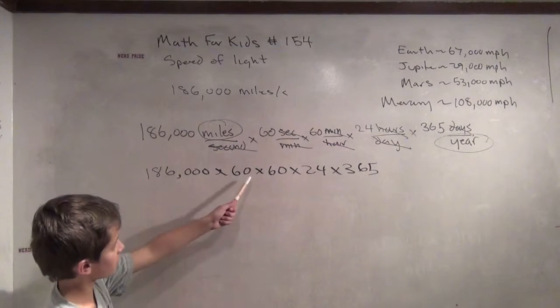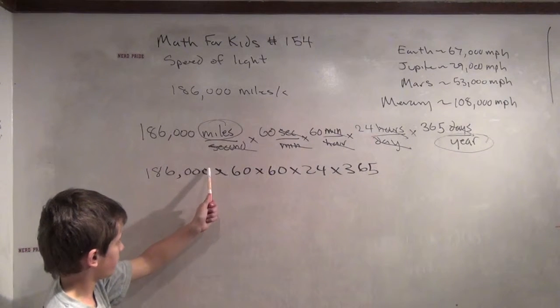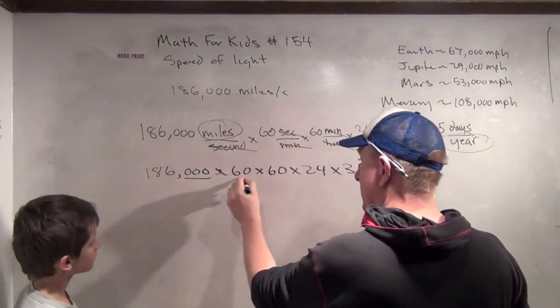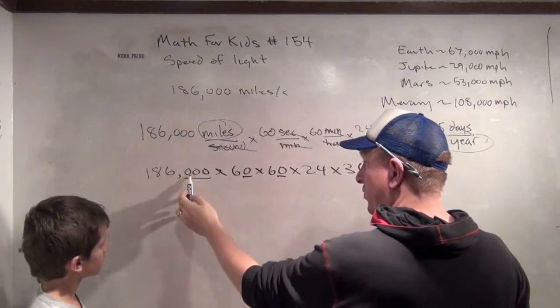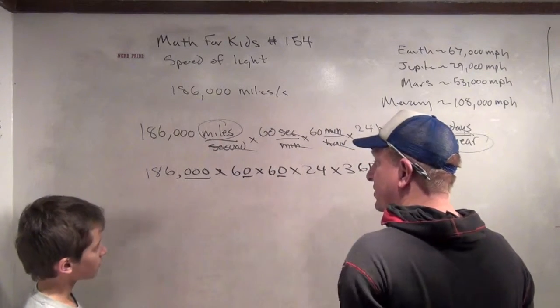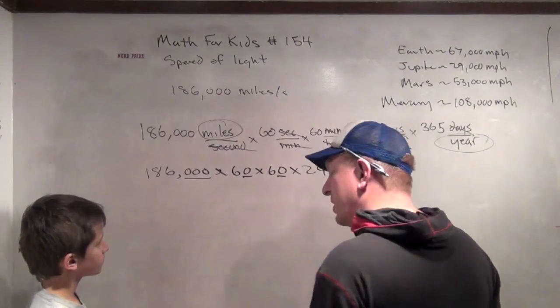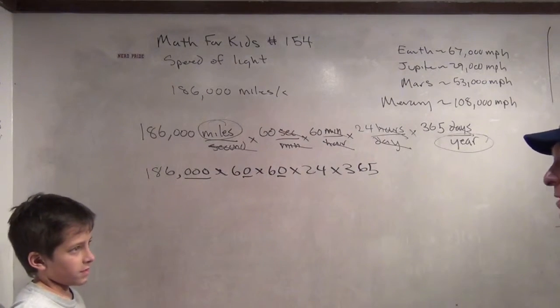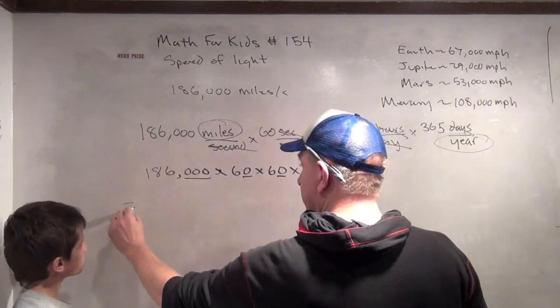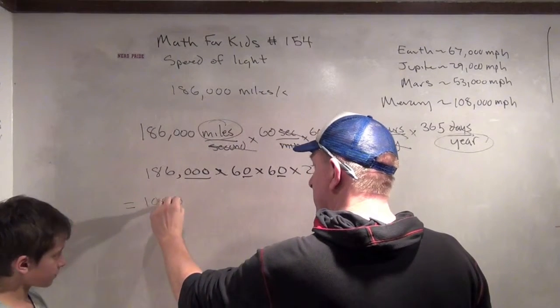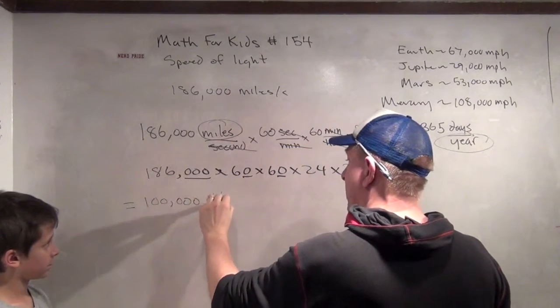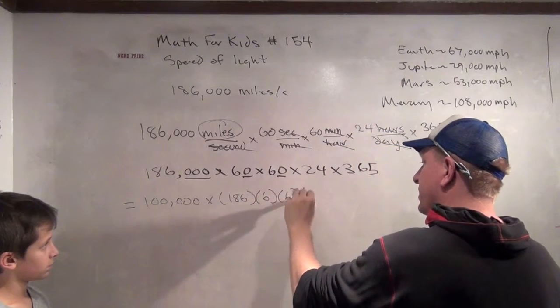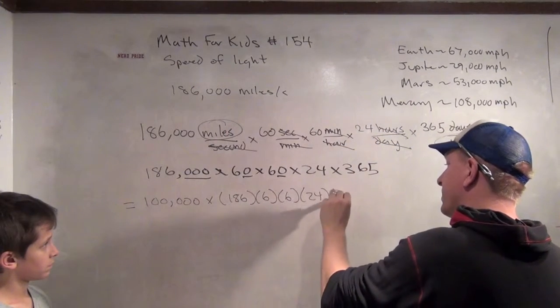So, we can just put the zeros on them. Okay. Yeah. That's actually a very, very good idea. Let's take all the zeros and pull them out. So, that's one, two, three, four, five zeros. Which is going to be...what number has five zeros? 100,000. Right. So, this equals...that's a great idea. 100,000 times 186 times 6 times 6 times 24 times 365.